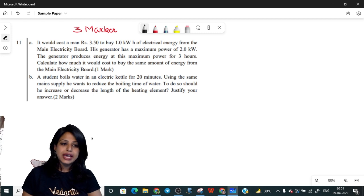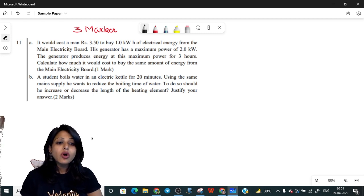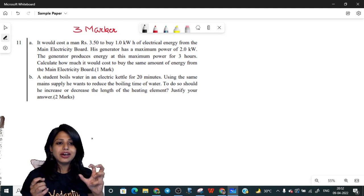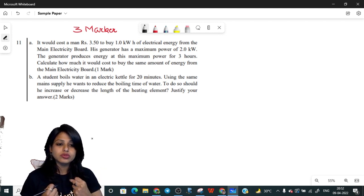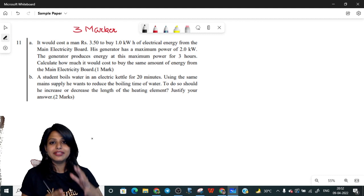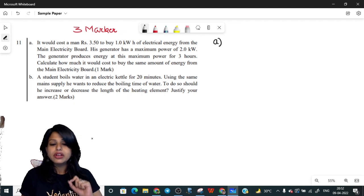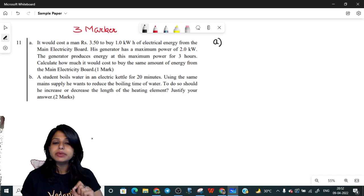Let's start reading the question. Question 11, part A: It would cost a man rupees 3.50 to buy 1 kilowatt hour of electrical energy from the main electricity board. His generator has a maximum power of 2 kilowatt and produces energy at this maximum power for 3 hours. Calculate how much it will cost to buy the same amount of energy from the electricity board. This is a one marker question - don't get anxious by the length of the question, it's just a unitary method question.